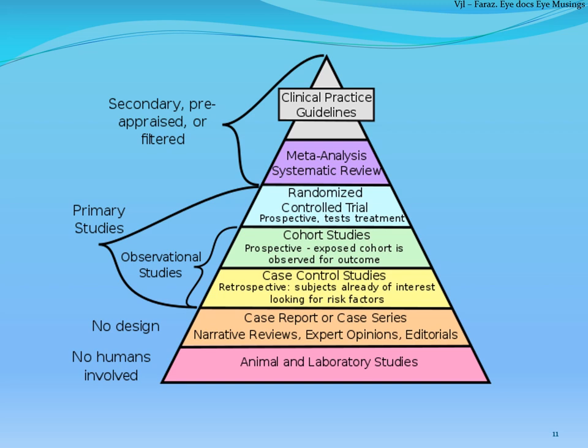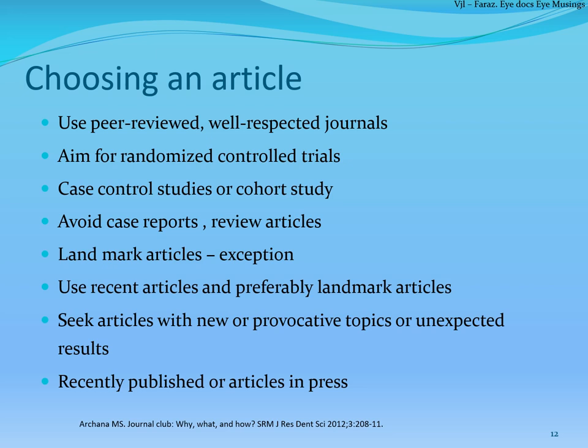This diagram shows the hierarchy of evidence. Whenever you are trying to choose an article, try to choose a randomized controlled trial, which is best. Otherwise go for cohort or case-control studies. Case reports and case series should be avoided as they do not have a specific design. Also avoid systematic reviews and preferred practice patterns, since they already give you filtered information put forward by the best in the industry after thorough discussions, and there is nothing to critique about them.